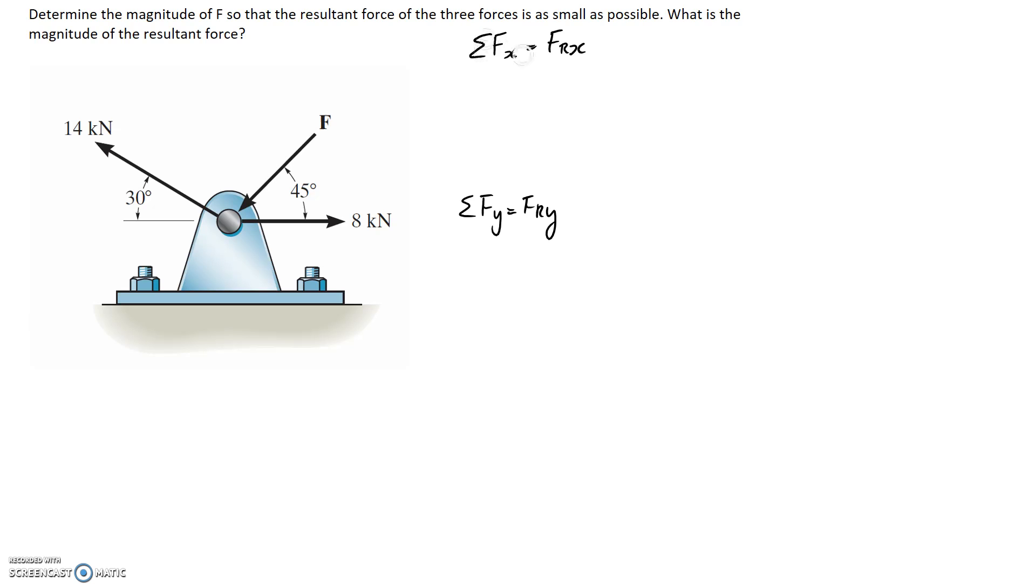Summing forces in the x direction, we're going to have to split each of these three up into their x components and y components. So if we go with the 14 one, it's going to have an x component like this, and a y component like this. The x part is going to be 14 times the cos of 30 degrees. And it's pointing in the negative x direction, so it's going to be negative.